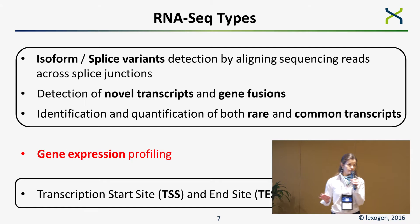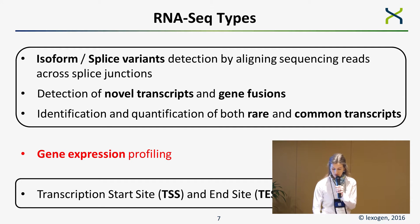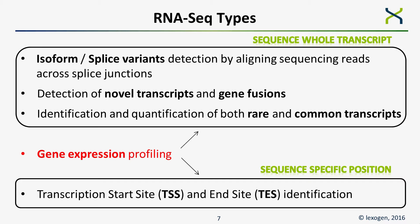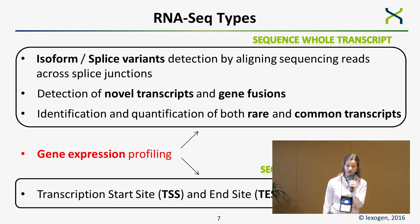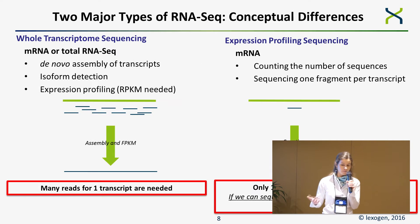I would like to group these applications into two groups. For detecting isoform splice variants, novel transcripts, and gene fusions, you most likely need to sequence the whole transcript. Whereas for transcription start site and end site identification, just a specific position would be enough. Gene expression profiling falls somewhere in between — we can use whole transcriptome sequencing or just sequence a specific position to identify the transcript.